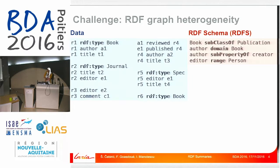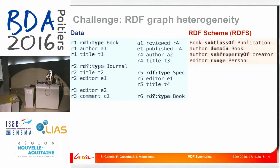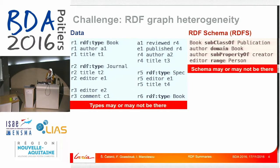The challenge is RDF graph heterogeneity. RDF graphs are usually composed of a data component and a schema component. There are two kinds of triples in the data: type triples and type properties, and all others are data properties. In the schema we consider four kinds of properties: domain, range, subclass, and subproperty. However, the types may or may not be there, the schema may or may not be there, and the data does not have to conform to the schema in any way.